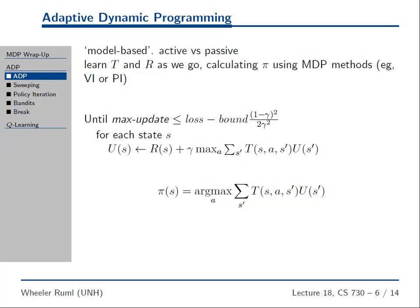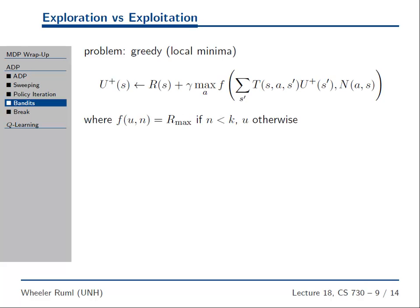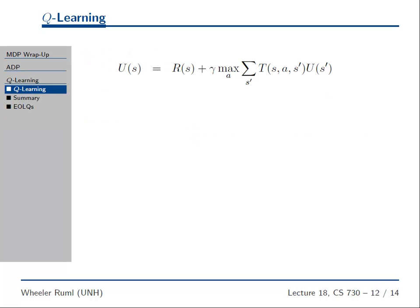So instead of having pi of S, what we're gonna do, instead of having U of S, we're gonna have Q of SA. If I'm in this state, what's the value of taking this action? It sounds like a totally minor little tweak, but it turns out to be important. Now, if we decide to formulate things this way, with Q SA, then this transforms into this.